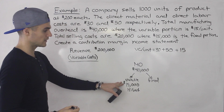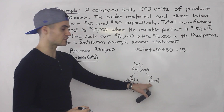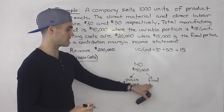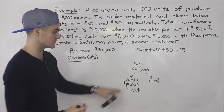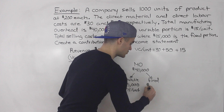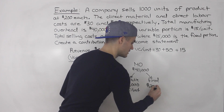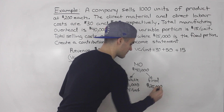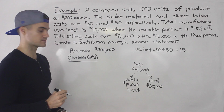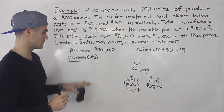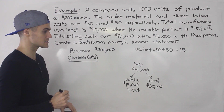The reason you want the total variable manufacturing overhead is so you can get the fixed manufacturing overhead. So $40,000 minus $15,000 means the fixed portion of manufacturing overhead is $25,000. That will come in later in the income statement.